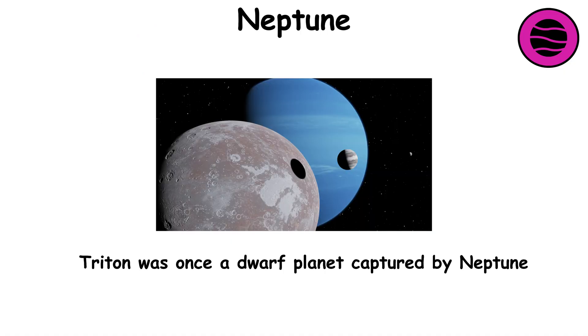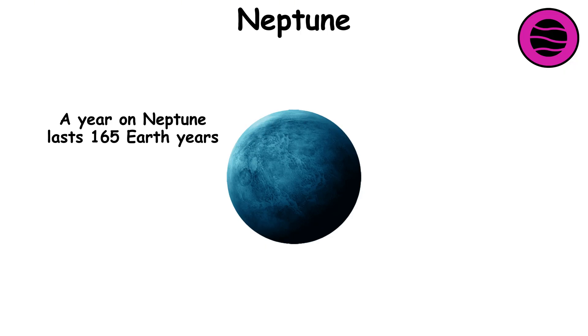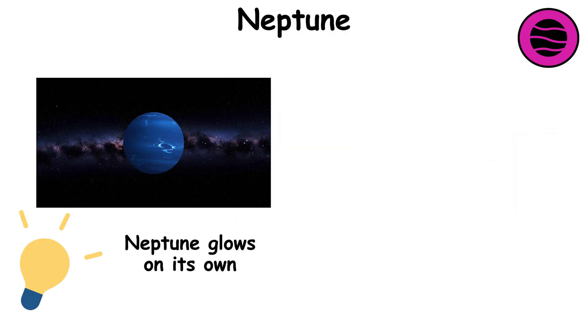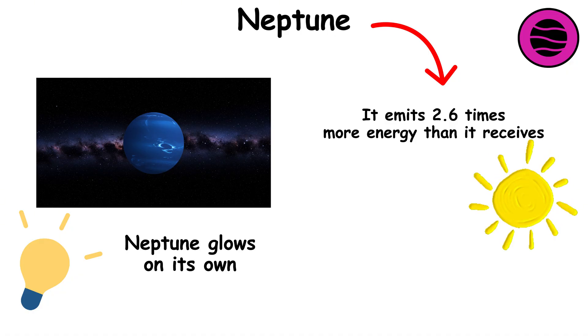It is believed that Triton was once a dwarf planet captured by Neptune. A year on Neptune lasts 165 Earth years, and its temperature drops to negative 360.4 degrees Fahrenheit. Neptune glows on its own. It emits 2.6 times more energy than it receives from the Sun, suggesting a possible internal heat source.